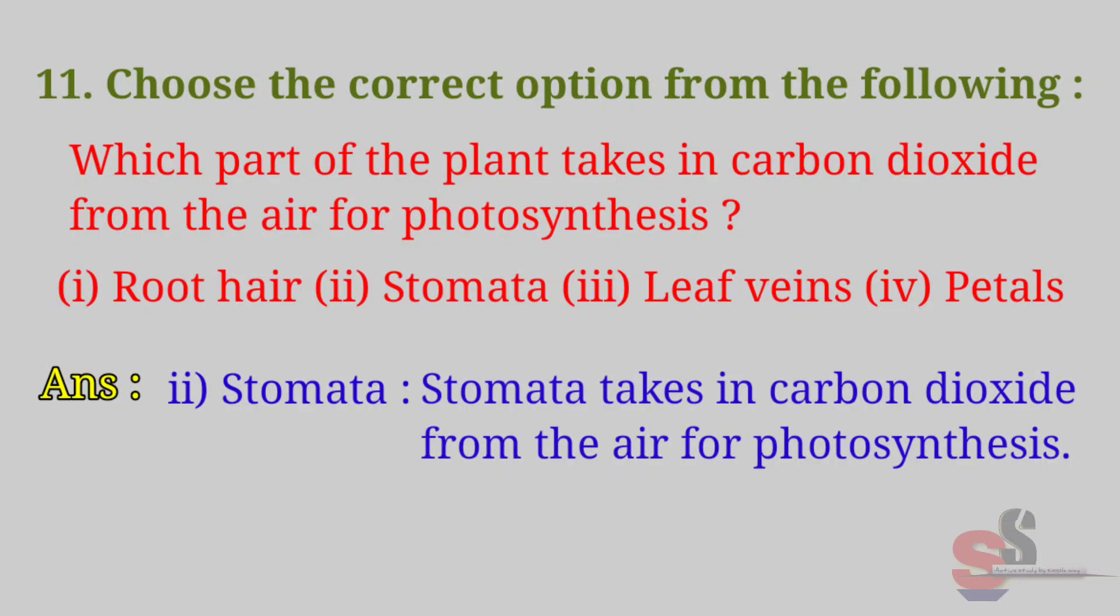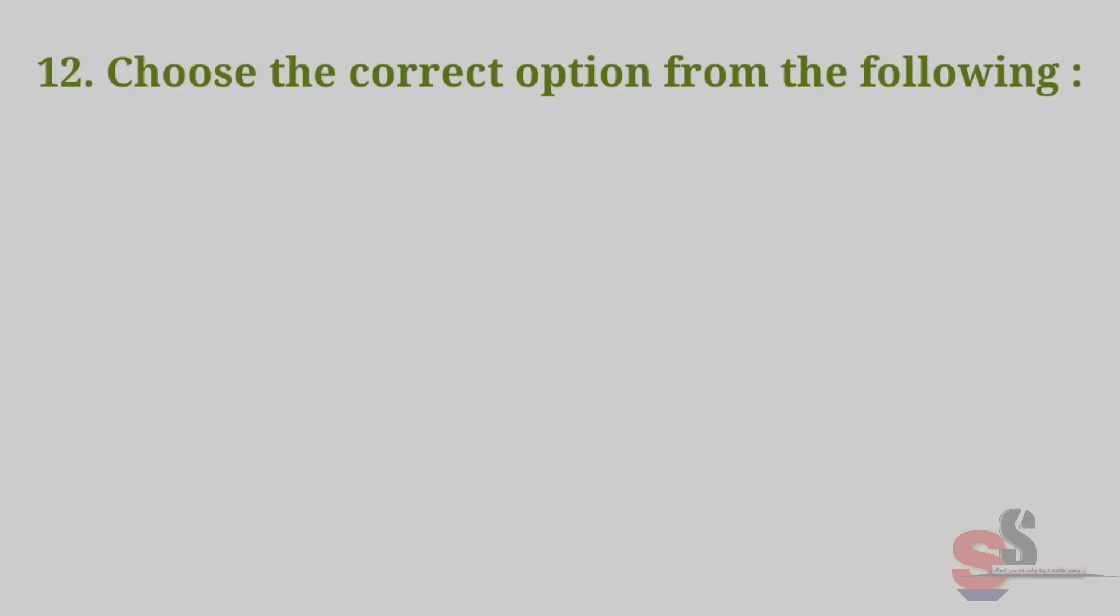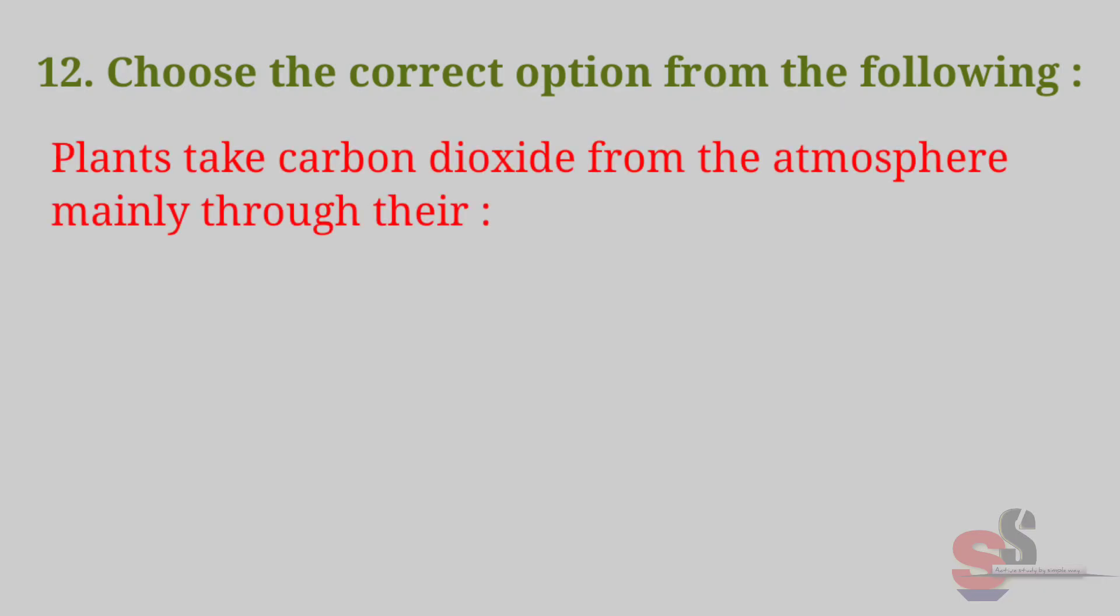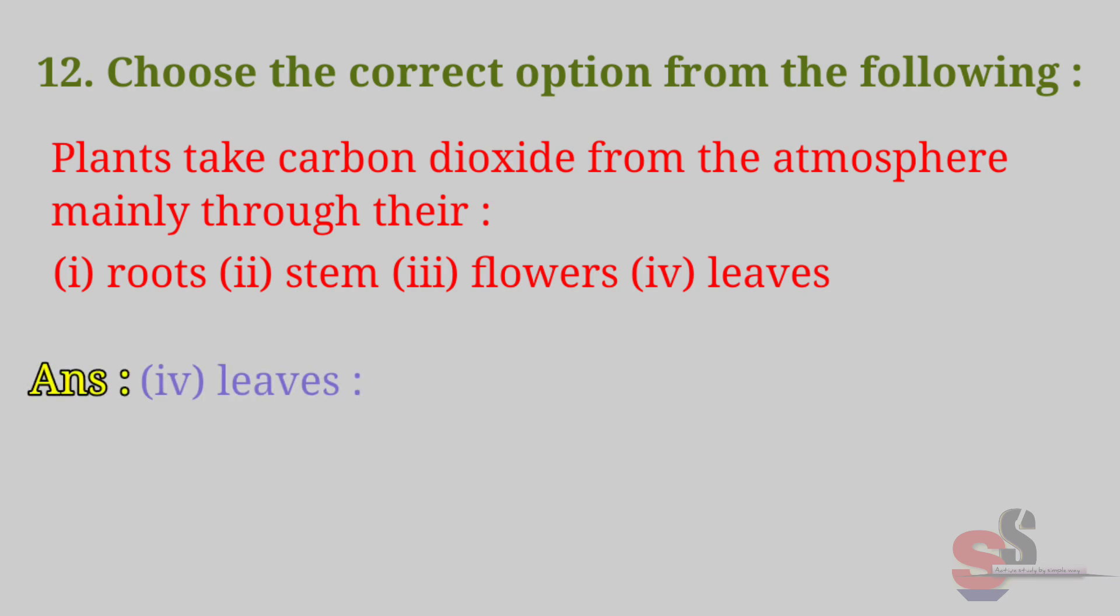Choose the correct option from the following. Plants take carbon dioxide from the atmosphere mainly through their: roots, stem, flowers, leaves. Answer: leaves. Plants take carbon dioxide from the atmosphere mainly through their leaves.